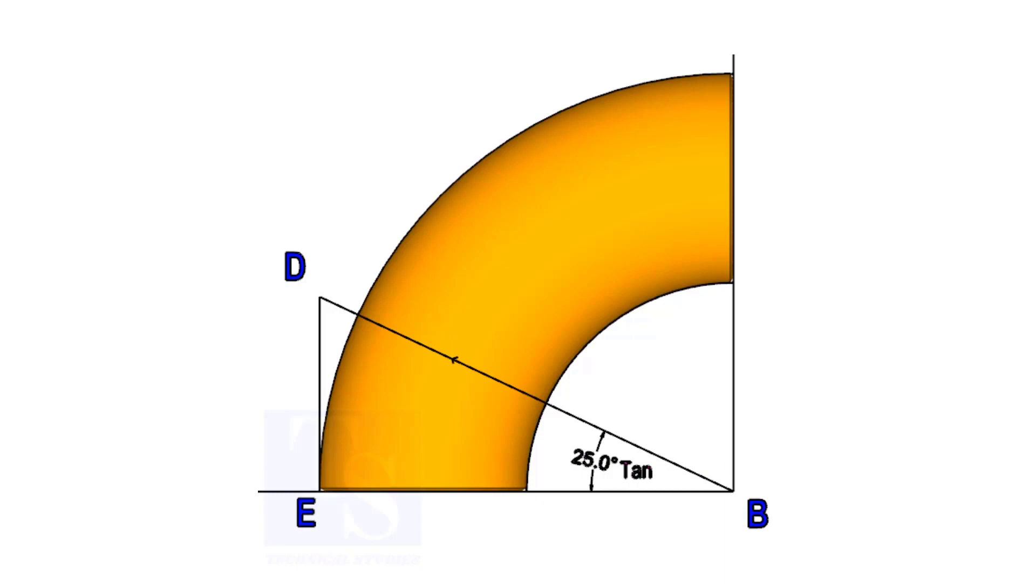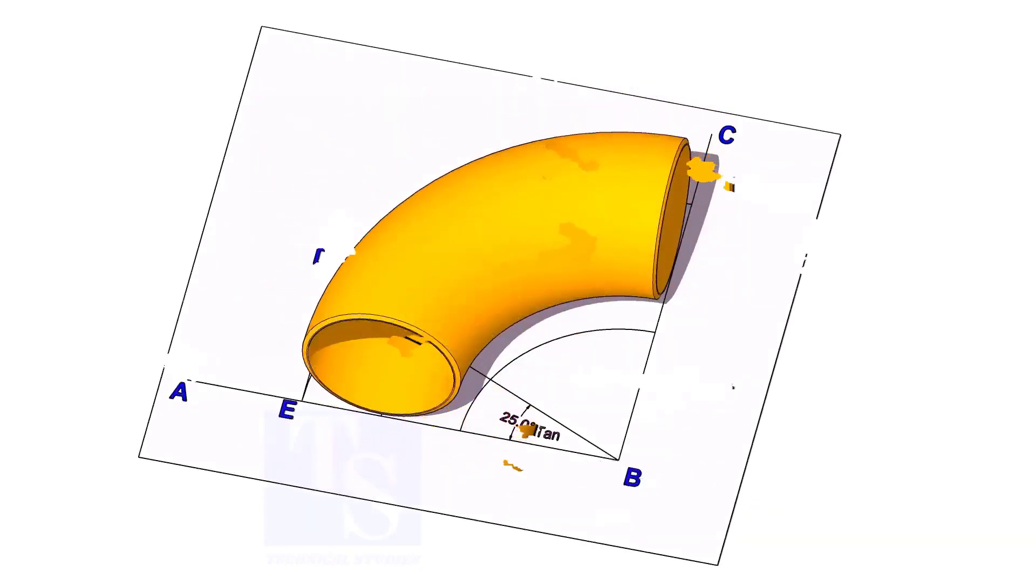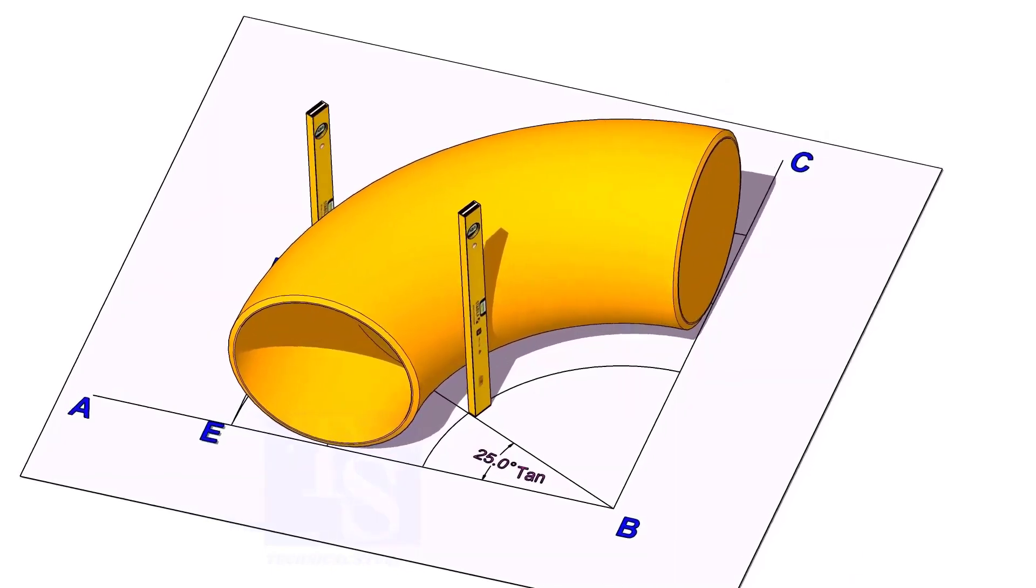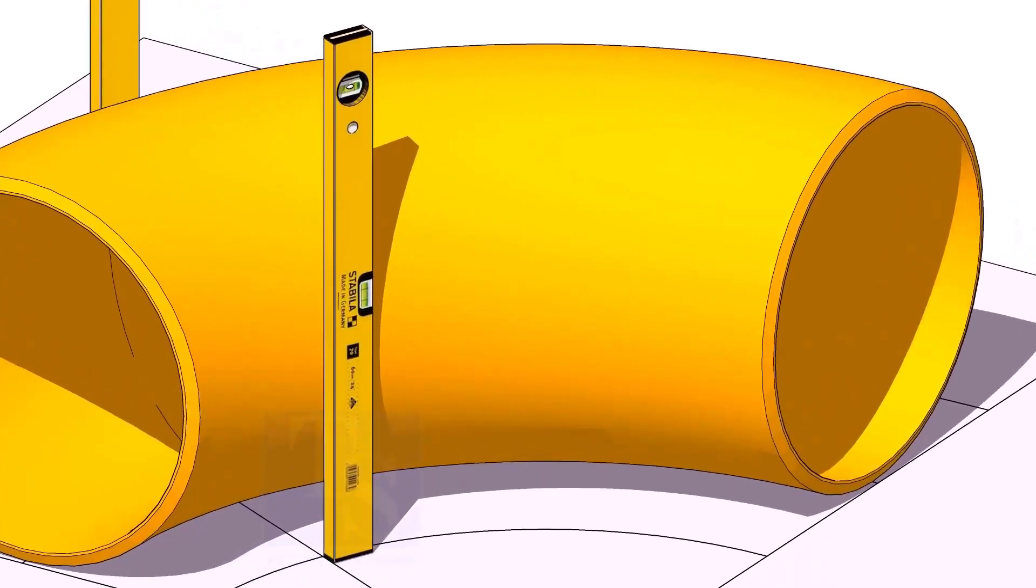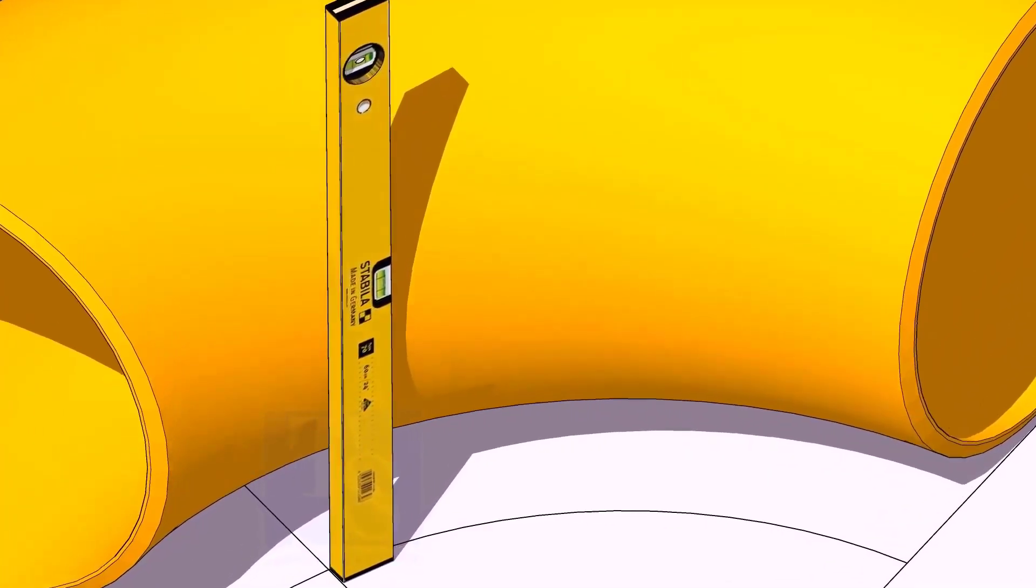Now, put the elbow exactly on the layout as shown. Hold two large level bottles at the edge of the elbow on both sides vertically and strike a mark where the level bottle edge touches the elbow.